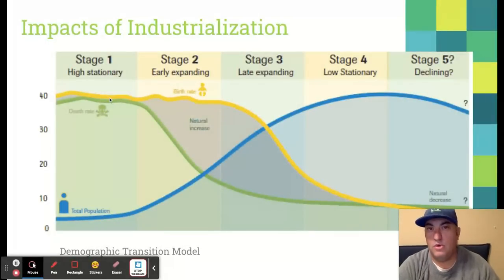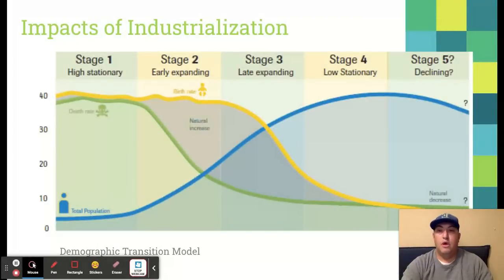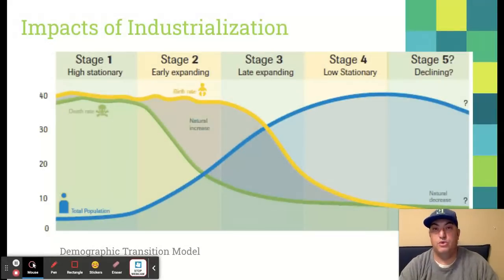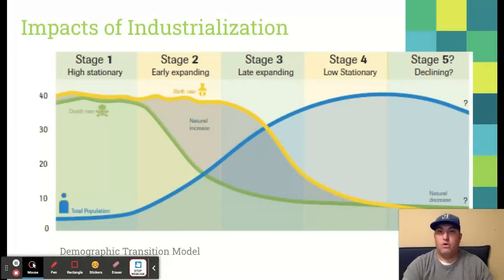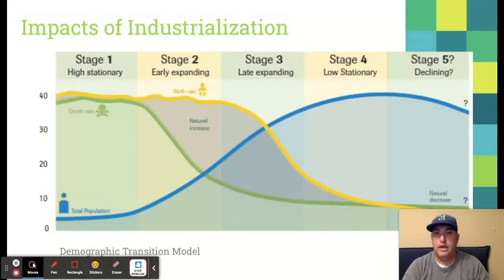Way back in stage one — and remember, no countries are really in stage one anymore — we were living in a very cruel world where there were high birth rates and high death rates. It was pretty likely that you were going to get sick of some awful disease and maybe not make it to adulthood. Because of that, families wanted to have a lot of children so there would be a chance those young people would make it to adulthood and they could have helpers to work on their farms. Many people were living in an agricultural, rural setting, and industrialization changes all of that. We start to see people moving away from those rural settings.